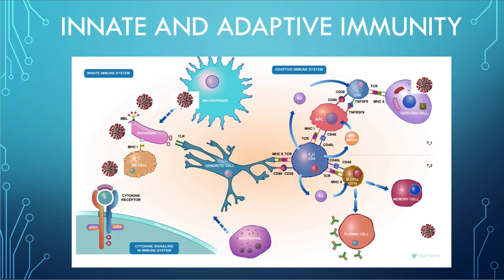This cartoon shows the complexity of the cellular response. However, I plan to simplify the description of the body's cellular immune response. There are two types of immunity: innate and adaptive. Innate immunity quickly responds to general threats. This response consists of physical barriers such as the skin, chemical barriers such as mucus, and cellular defenses that include macrophages, natural killer cells, and other types of white blood cells.